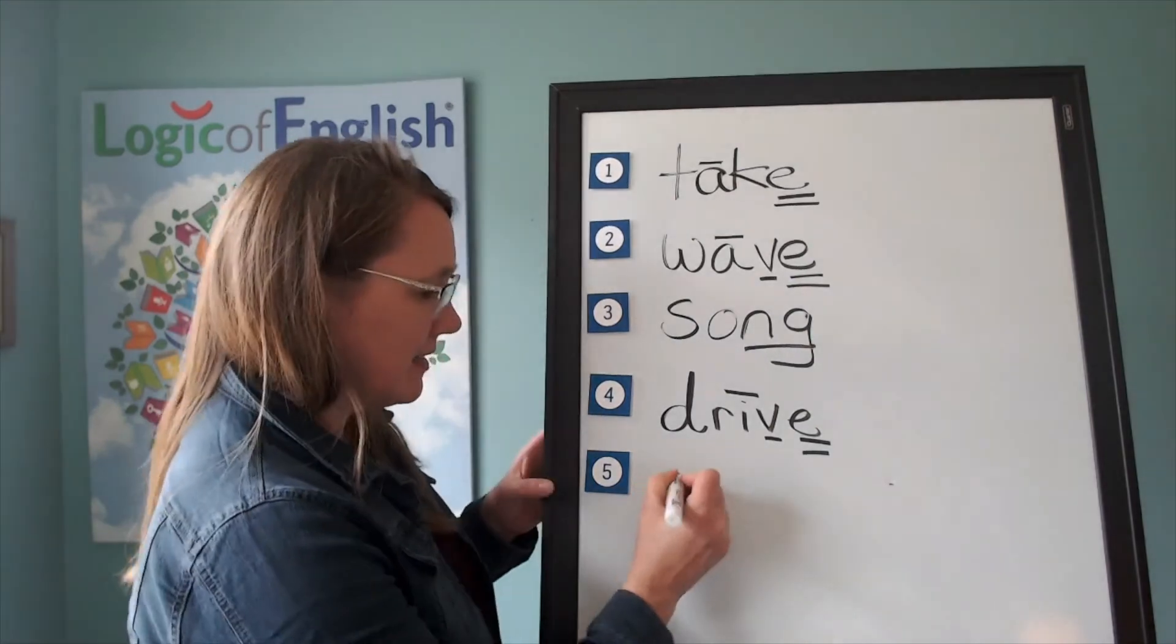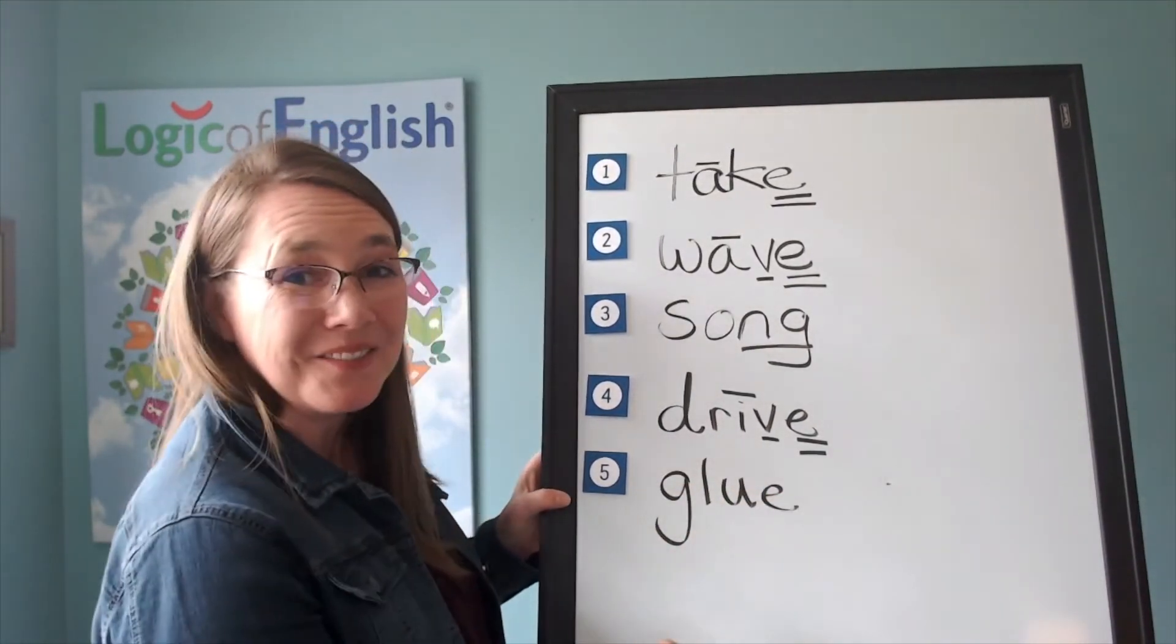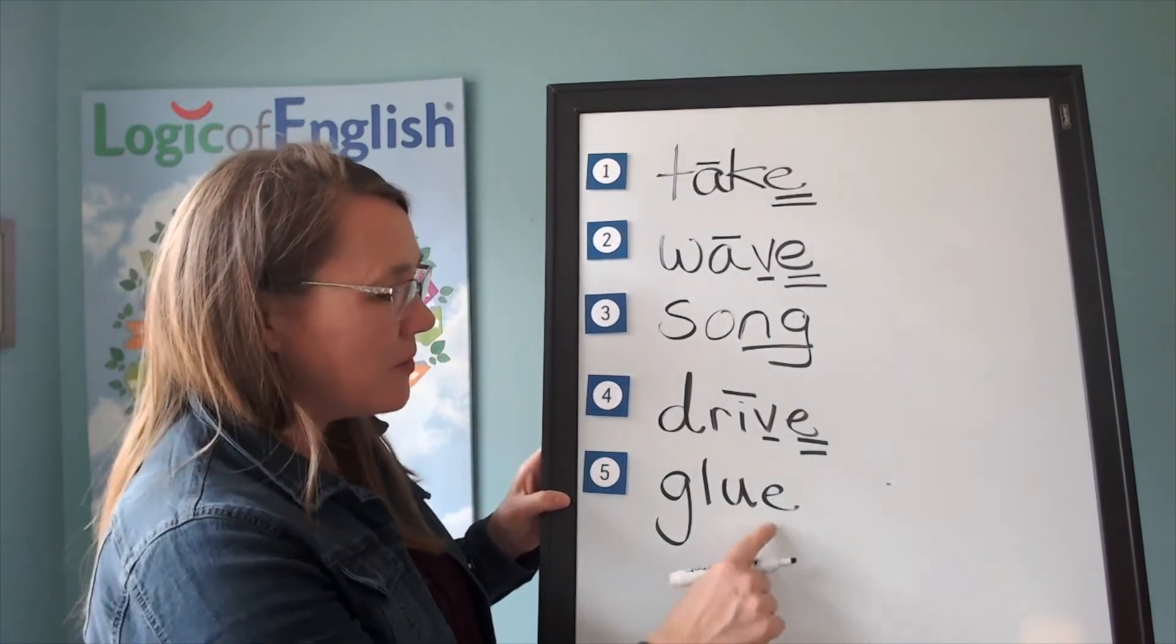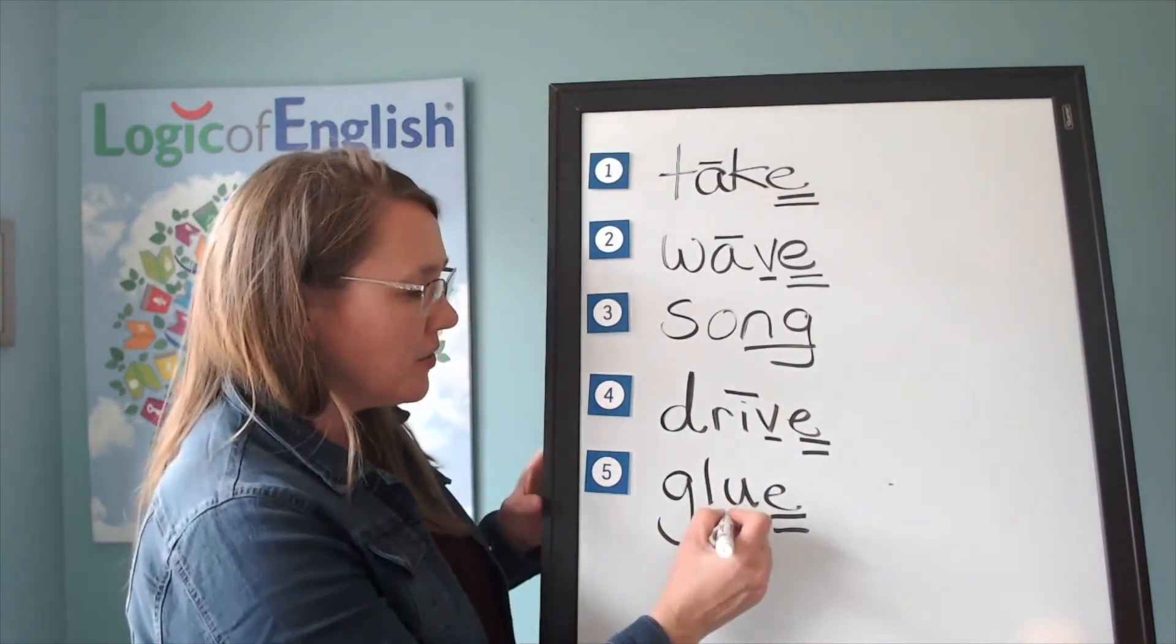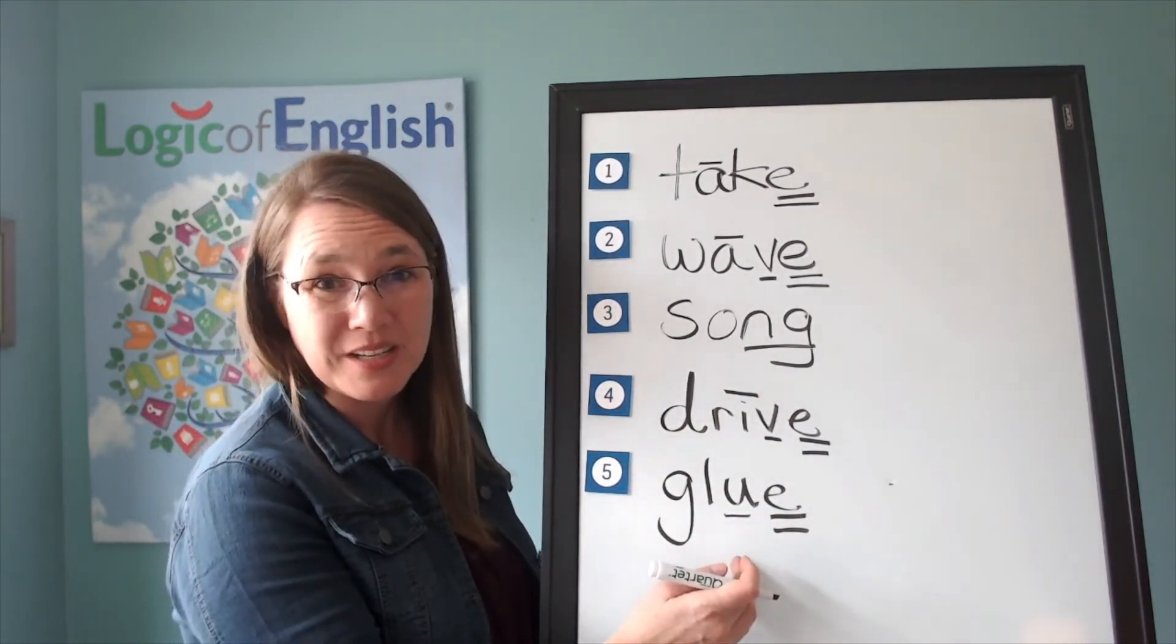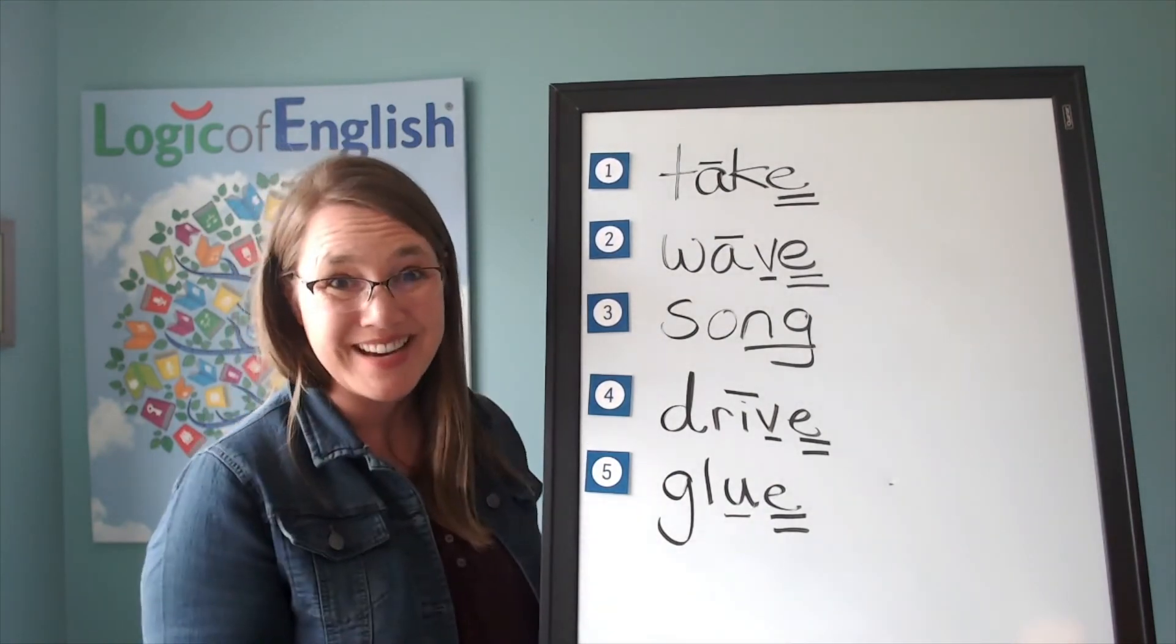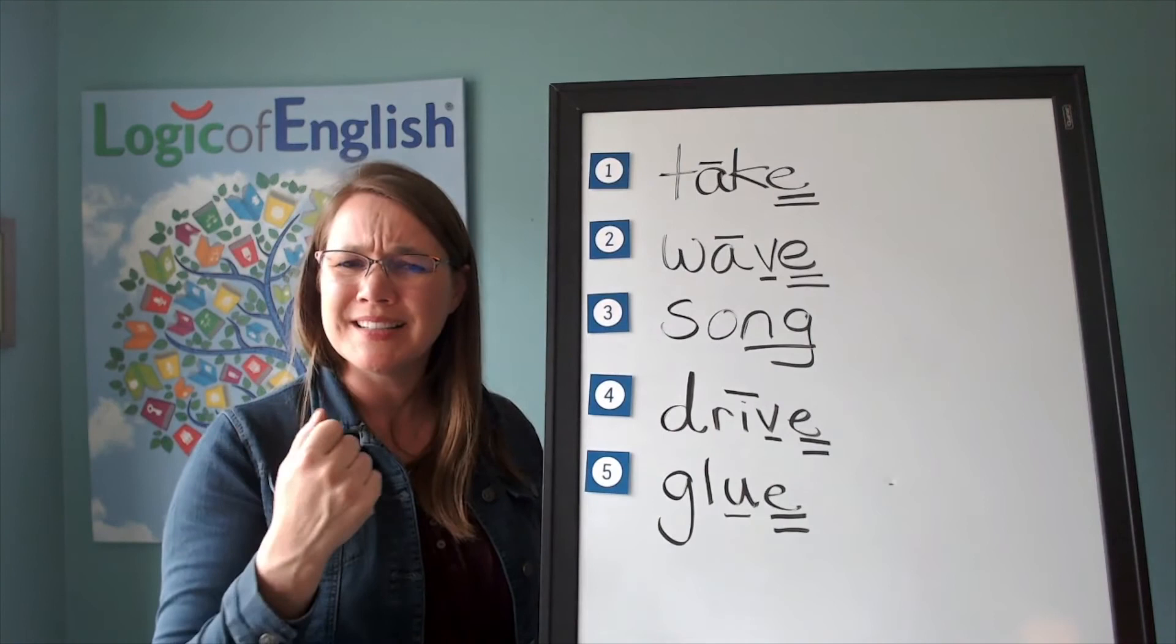All right. Go ahead and write glue. Now help me to write it. G-L-U-E. Silent final E. Why do we have a silent final E in glue? You're right. English words do not end in U. So every time we have a U at the end, we need a silent final E.